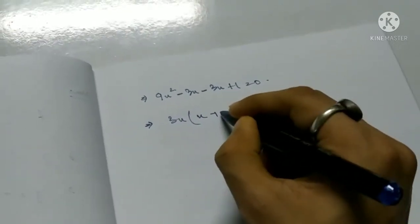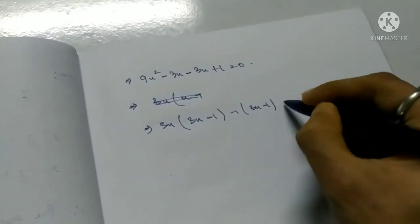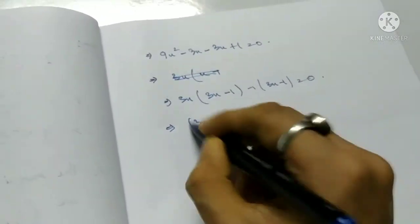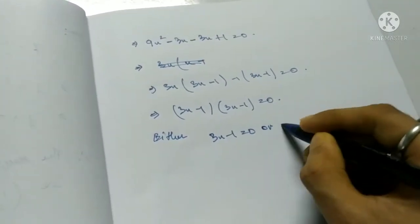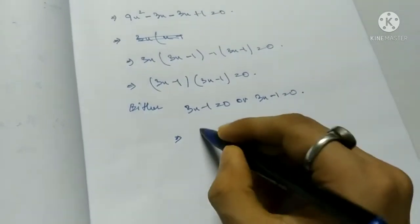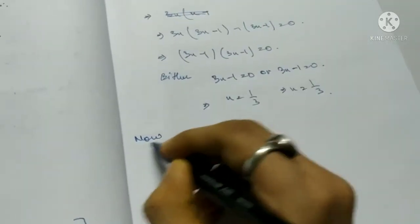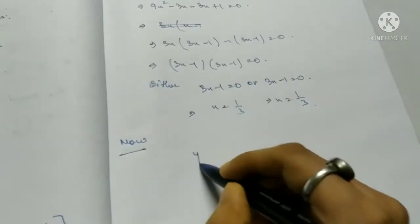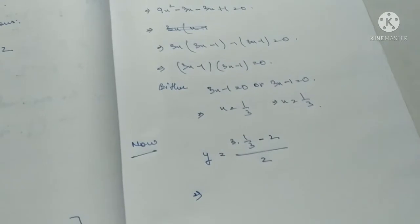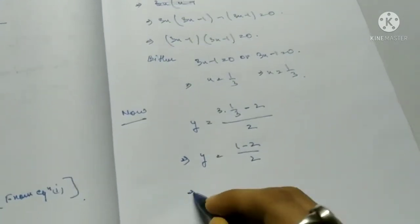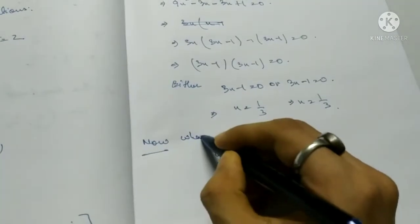Factoring: 3x(3x minus 1) minus 1(3x minus 1) equals 0, so (3x minus 1)(3x minus 1) equals 0. Therefore x equals 1/3. Substituting back: y equals (3 times 1/3 minus 2) by 2 equals (1 minus 2)/2 equals minus 1/2.